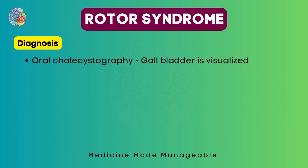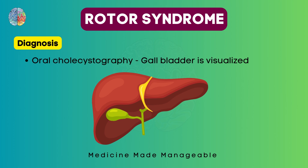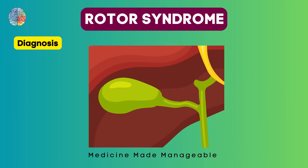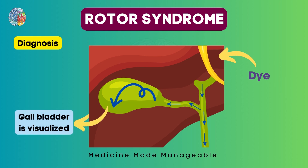We can also do oral cholecystography where the gallbladder will be visualized. Here is the liver with the gallbladder. When we give the dye, it will be able to go through the bile ducts into the gallbladder, so the gallbladder will be visualized in Rotor syndrome. But in Dubin-Johnson syndrome, since the dye cannot pass through, the gallbladder will not be visualized. This is another differentiating factor to remember.